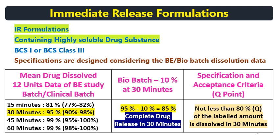Now let's see another example of an IR formulation containing a highly soluble drug where complete release occurs in 30 minutes. At the 30-minute time point, 95% drug release is happening. Therefore, 95% minus 10% gives you 85%, and you can set the specification of not less than 80% Q of the labelled amount of drug dissolved in 30 minutes.